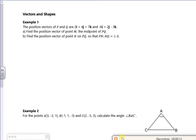So it says the position vectors of P and Q are there. So I know that OP is (2, 4, 7). And I know that OQ is (-6, 2, -3). And I want the position vector M, which is the midpoint of P to Q.